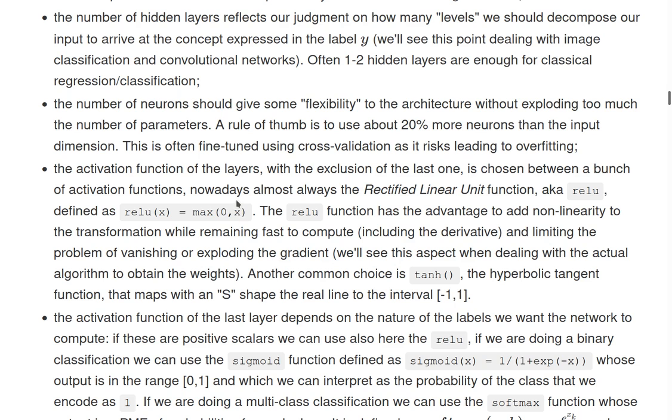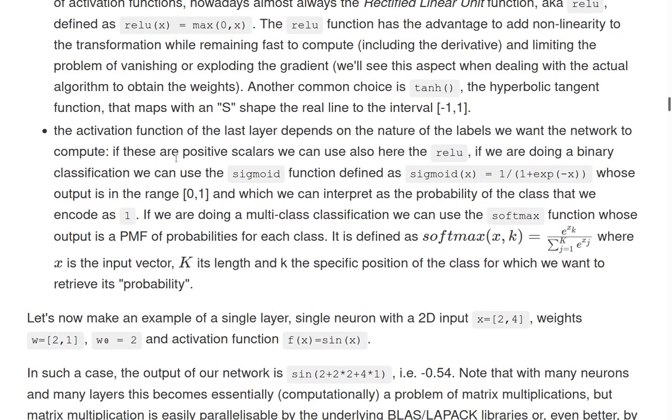And so this adds some non-linearity to the transformation while remaining very fast to compute and also very fast to compute the derivative. And also because if we are over in the positive part of the line, the gradient is equal to one. And so it limits the problem of what is called vanishing or exploding the gradient. We'll see this aspect in particular when we deal with the algorithm to obtain the weights. But the idea is that we need to compute the gradient, the derivative of each weight, and some other functions will make it very difficult this task, while the ReLU is very efficient to keep the gradient manageable.